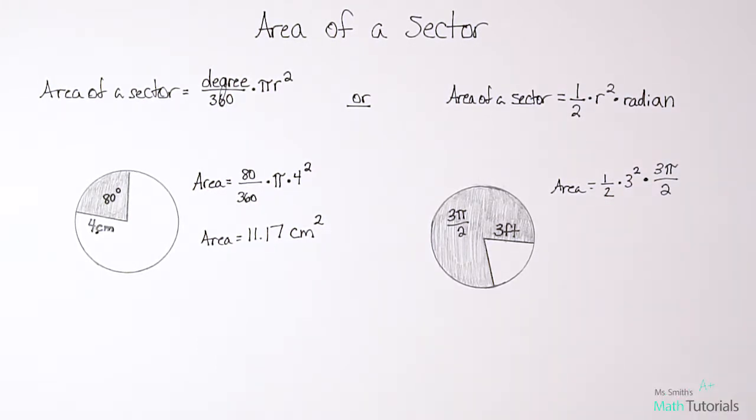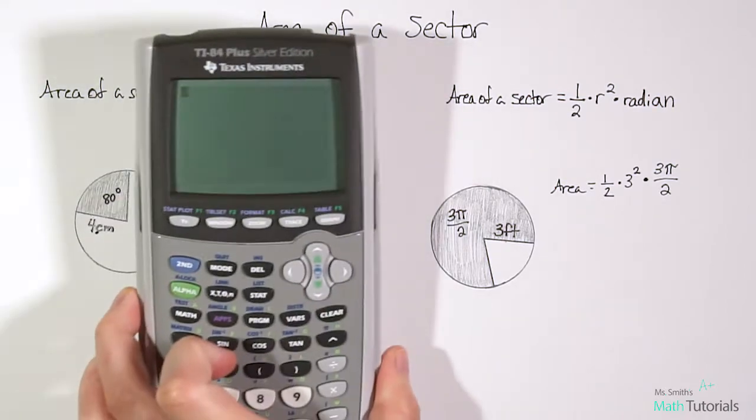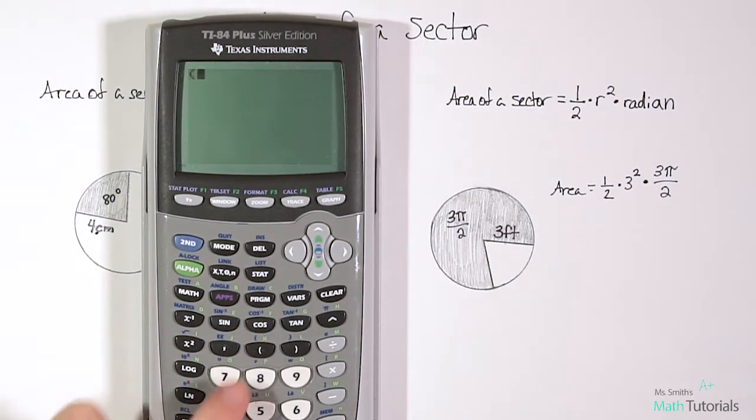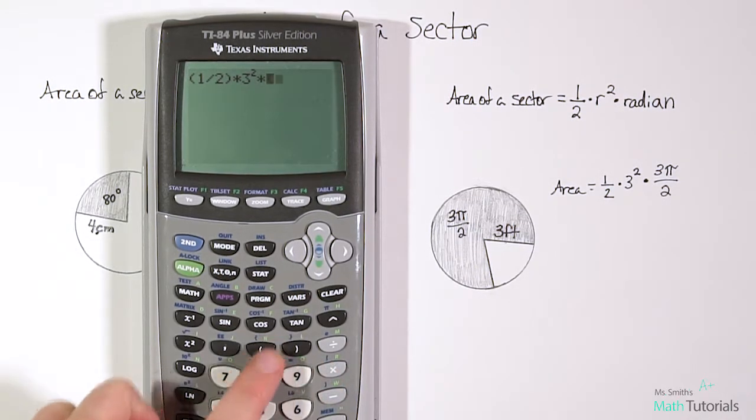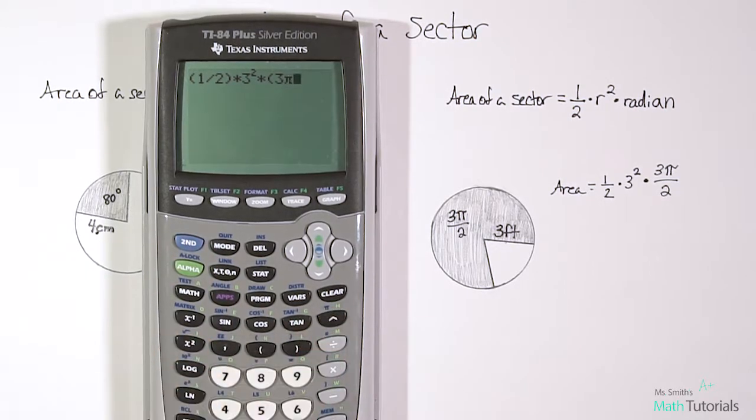And again, your calculator can do this for you if you bring it out. So we've got 1 half times 3 squared times parenthesis 3 pi over 2. And that gives us 21.21 if we round to the nearest hundredth. So let's write that answer.